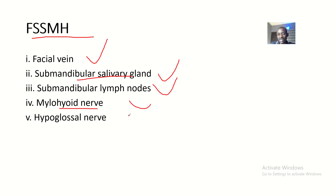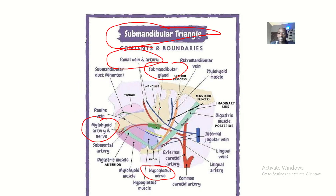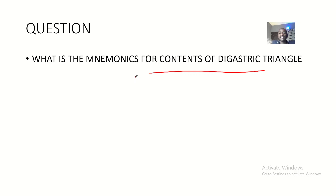So repeat after me: first MH. Mnemonics will help you a long way so that you don't mix things up. You might know the structures, but you won't remember which belongs where. Mnemonics help you clearly differentiate — so you don't mix up the submandibular triangle with the posterior triangle of the neck, or the occipital triangle. There are so many triangles, and trying to memorize structures name by name without mnemonics will leave you confused. That's it for the mnemonics to remember the contents of the digastric triangle, also known as the submandibular triangle.